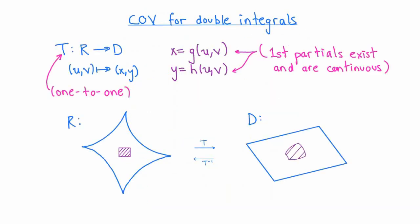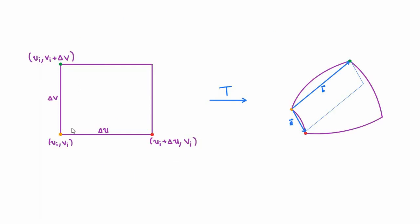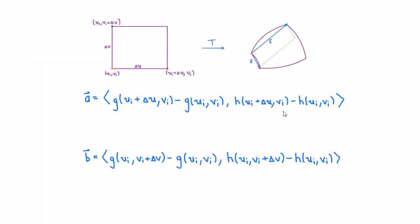Here's a picture analogous to the Riemann sum picture in one dimension. When we define the double integral over our region R, we divide the region into very small rectangles, pick a point ui star, vi star inside each rectangle, and build a two-dimensional Riemann sum. Just as in the one-dimensional case, let's zoom in to see what the transformation T does to a small rectangle. Label the lower left-hand corner as ui, vi and write delta v and delta u for the side lengths. The transformation T maps three corners of the rectangle to points in region D; write a and b for the vectors connecting the orange point in D to the red and green points respectively.